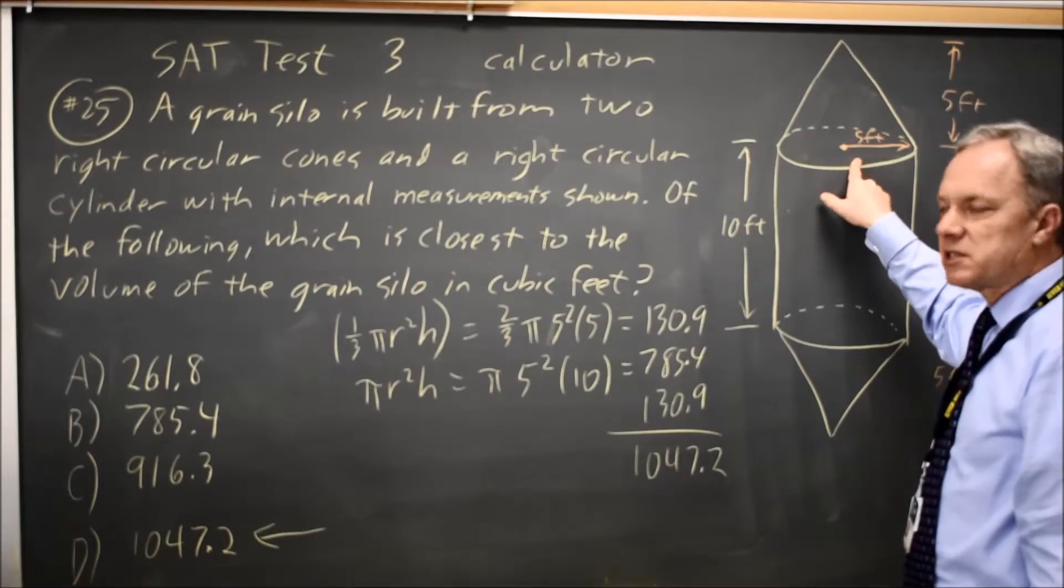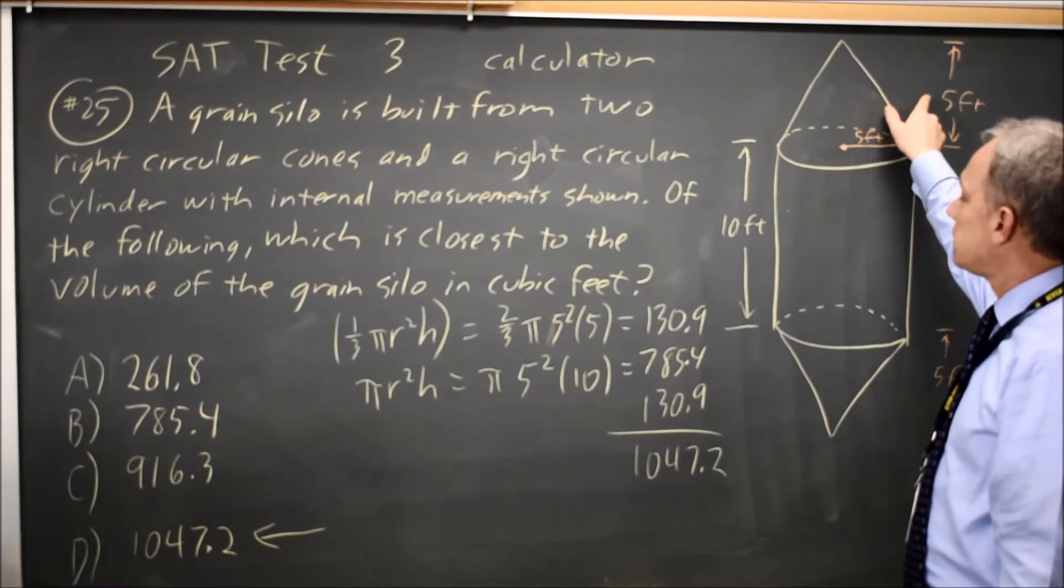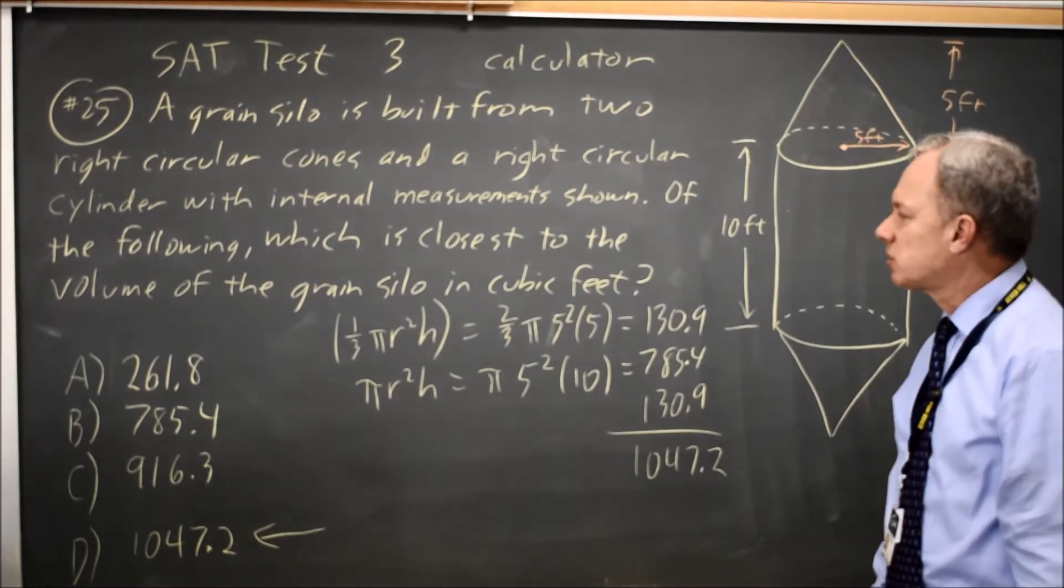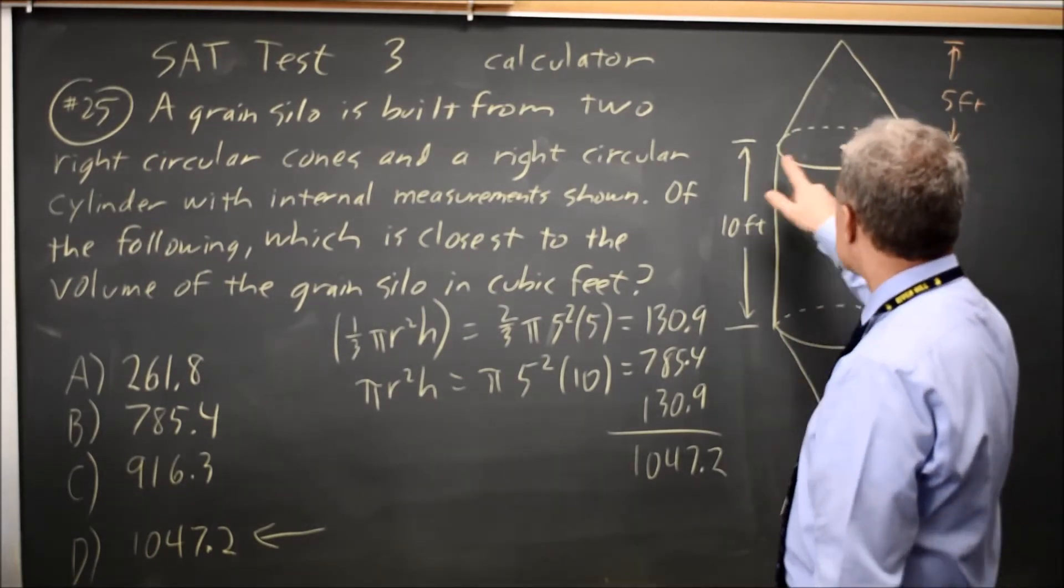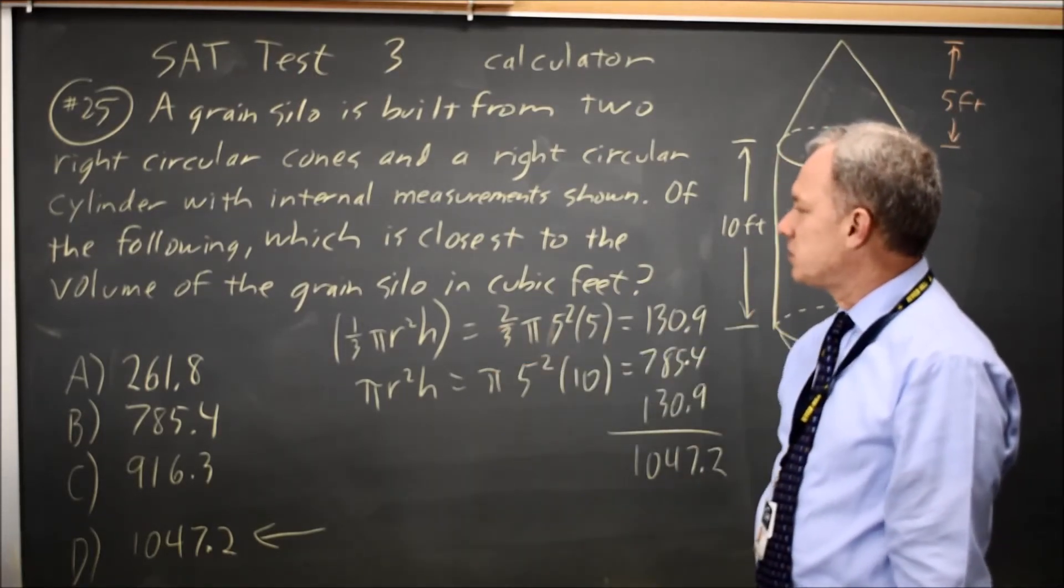They will often give you d instead of r. Remember, the radius is half the diameter. And find the height h of your cone or cylinder. So the cylinder has a height of 10 and a radius of 5. They also included cones here.